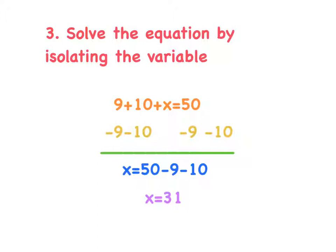Next, solve the equation by isolating the variable. You subtract 9 and 10 from each side of the equation, and then you get x equals 31.